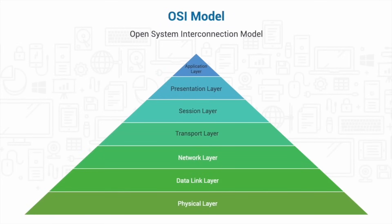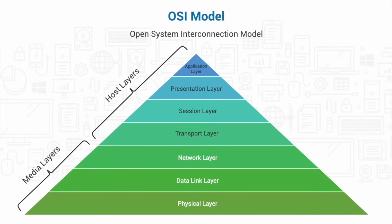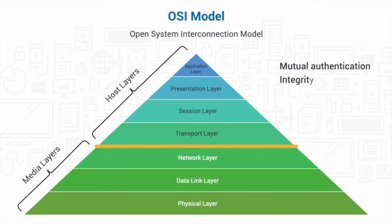The OSI model provides standards for communication in a computing system, which allows interoperability of various systems regardless of their internal structures. It's composed of seven layers, each layer being served by the layer below it. The bottom three layers are the media layers and the top four are the host layers. Layer 3's primary goal is communication, not security. Applying IPsec on top of Layer 3 provides security through mutual authentication, integrity, non-repudiation, and confidentiality.